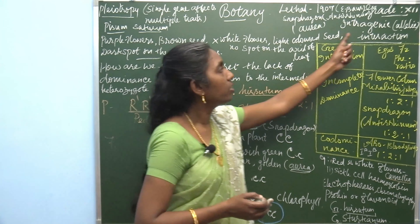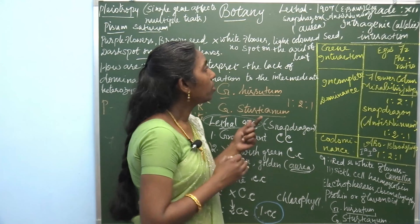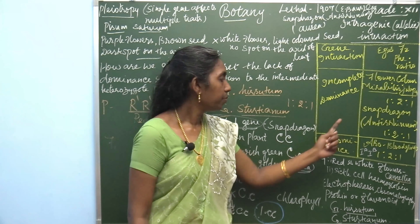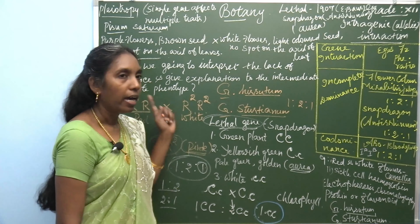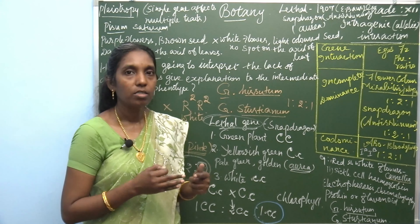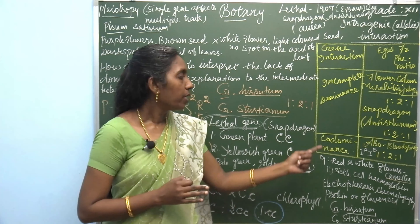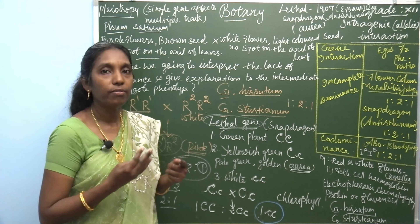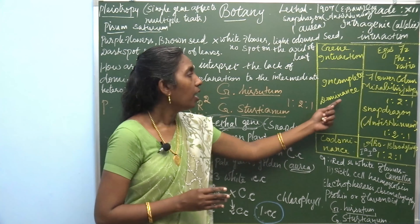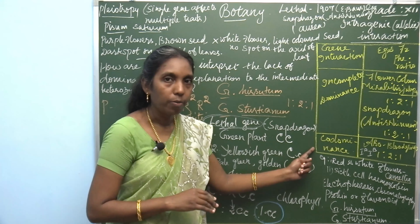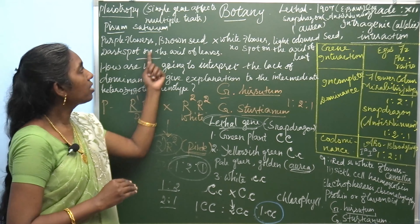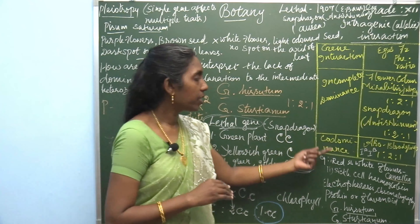All these come under intragenic or allelic interaction. The four examples are: incomplete dominance, codominance, lethal gene, and pleiotropy. Learn the molecular explanation of incomplete dominance, the examples of codominance, lethal gene, and pleiotropy clearly.